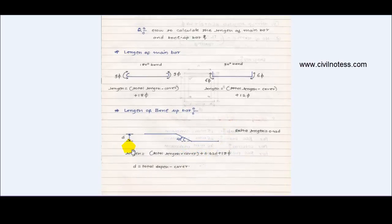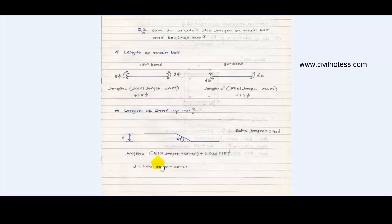The length of bent up bar is calculated as follows: capital D minus clear cover equals small d, meaning total depth minus cover gives the effective depth d. The length of the bent up bar is total length minus cover plus 0.42d (extra inclined length) plus 18d for the end hooks.